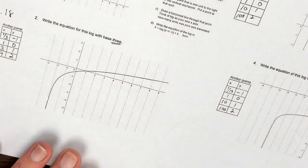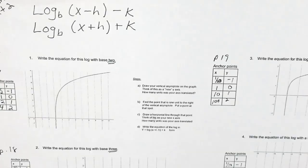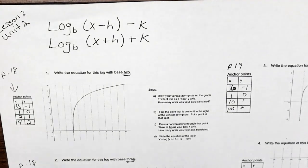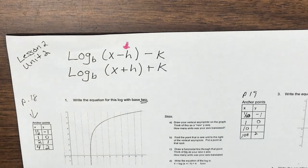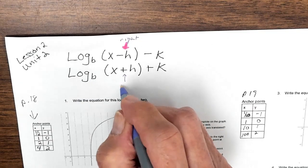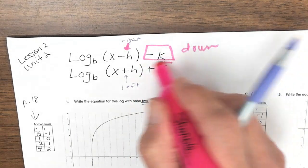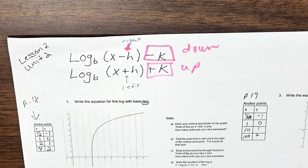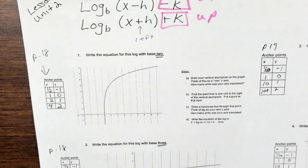Our main focus today was graphing. We're going to graph some logs and also come up with equations of logs. A reminder: if you have a number inside parentheses next to x, subtracting means moving to the right, and adding means moving to the left. If we have some number outside and we're subtracting, we go down; if we're adding, we go up. We're going to look at a graph and come up with an equation.